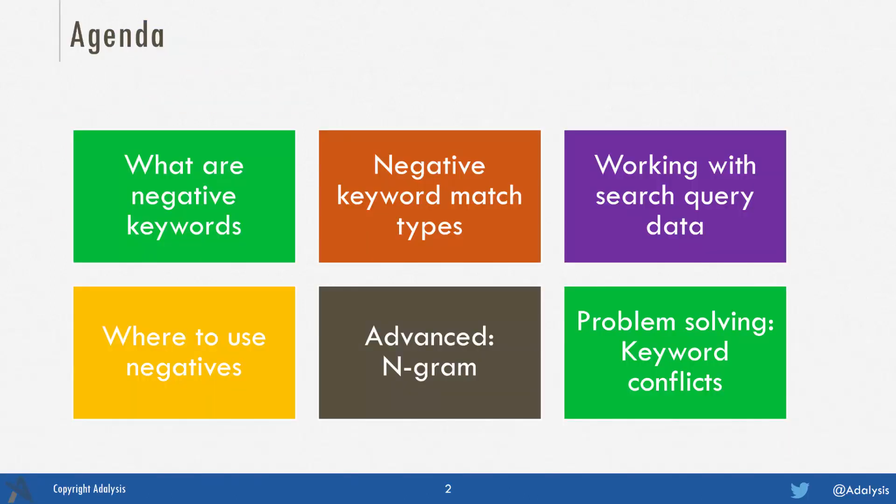We're going to start with the beginner stuff: what are negative keywords and what are their match types. Then we'll go into working with negatives, working with search query data, and how to use them. Then we'll move to more advanced topics such as n-gram analysis. And finally, when you start using a lot of negatives, you often end up with conflicts, so we're going to look at problem solving from conflict and query management.